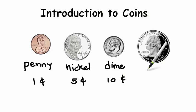And last we have here the quarter. And the quarter is worth the most out of all of these. It is worth twenty-five cents. So we have the penny, the nickel, the dime, and the quarter.